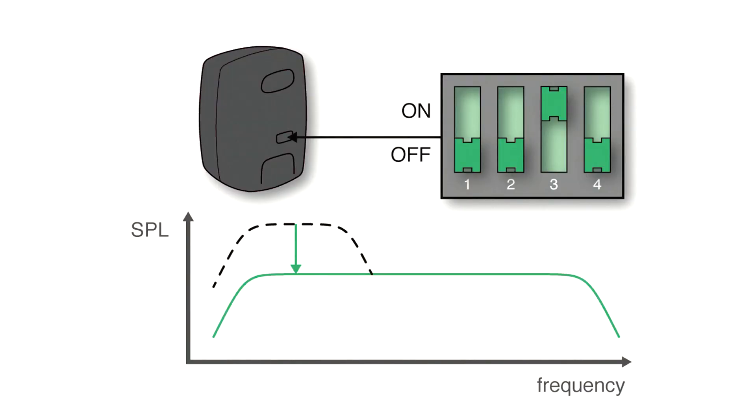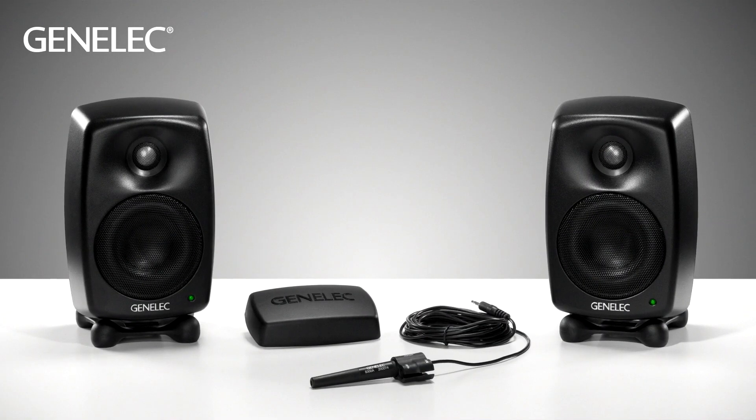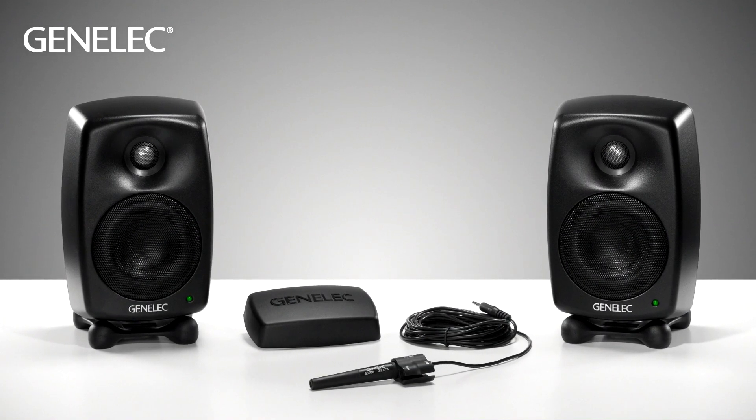In practice it's a bit less than that, and you can compensate for this bass boost by using the DIP switches in your speakers — you do use the DIP switches, right? — or by using the AutoCal function in GLM if you're using SAM speakers.